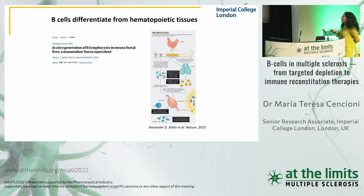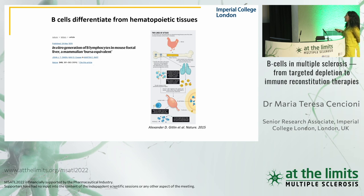Later, in a paper published in 1964 in Nature, John Owen with Max Cooper demonstrated for the first time that hematopoietic tissues are able to differentiate B cells in vitro. This publication started to demonstrate that bone marrow serves the same function as the bursa in chickens — it is able to produce from hematopoietic stem cells and initiate the generation and differentiation of T cells in the thymus and B cells in the lymphoid organs.